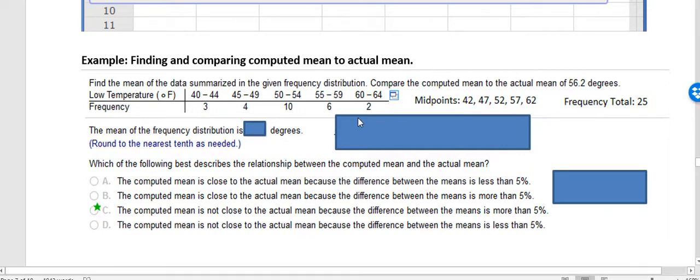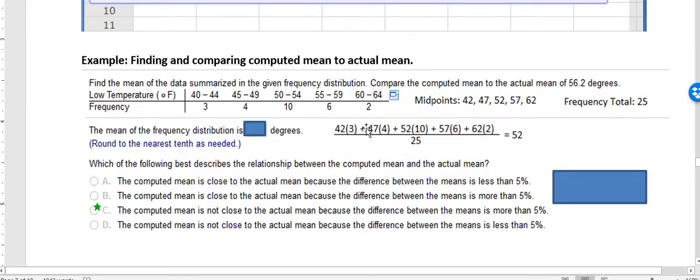And so what that would look like if you were doing that on your calculator would be 42 times 3, because there's a frequency of 3 for that particular data class, and then 47 times 4, 52 times 10, 57 times 6, 62 times 2, and then you would add all that together and then divide by the total frequency, which is 25.